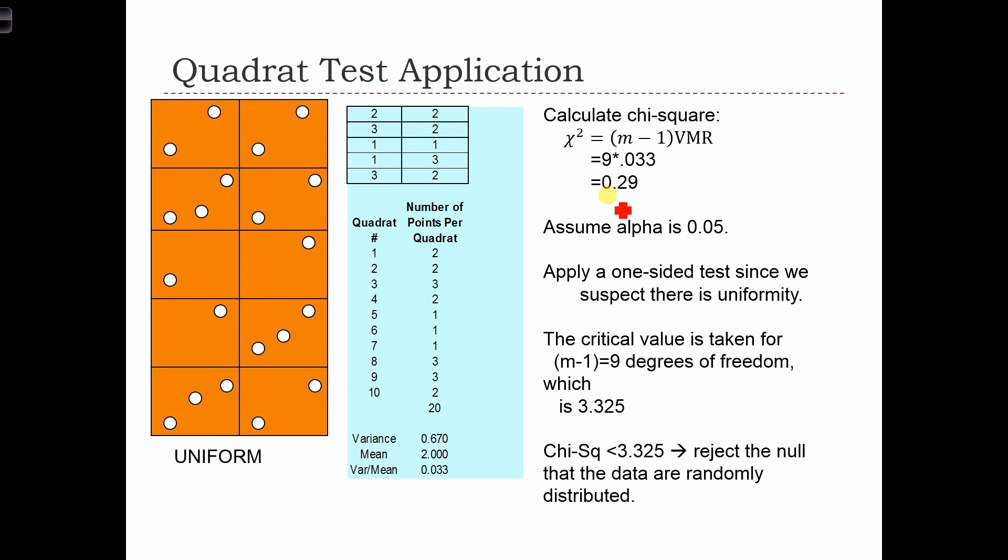And now our chi squared is 0.29. And remember that the critical value, if we put 5% in the left tail, because here the alternative hypothesis is that instead of being random, the data are uniform, so it's a left tail test, which had a critical value of 3.3,